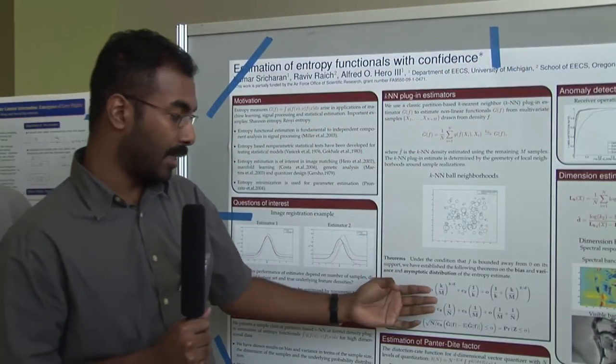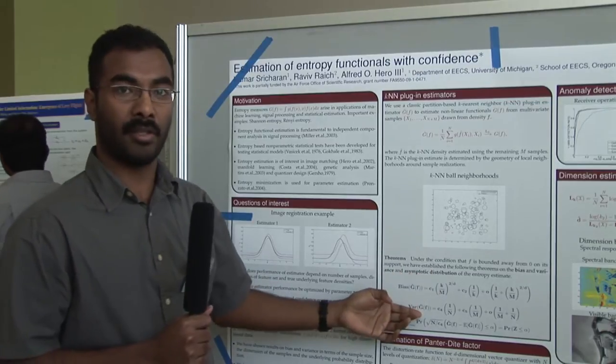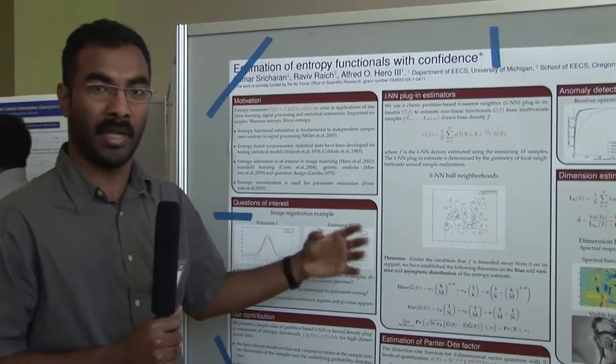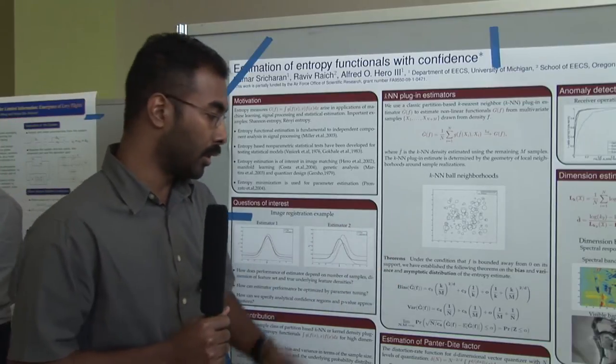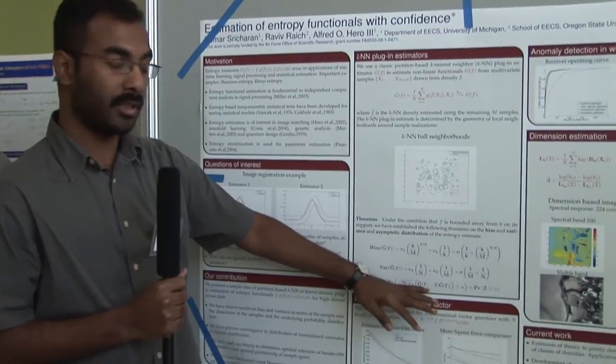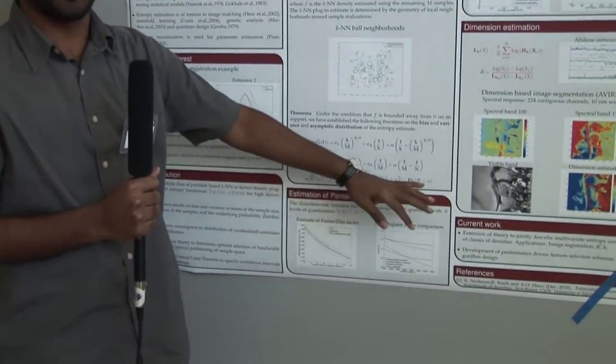Moreover, I also show finite sample rates on the bias and variance of this estimator. These results are new and are the core of my work that makes it different from other work in the literature. I also show that my estimator, when appropriately normalized, converges in distribution to a normal random variable.